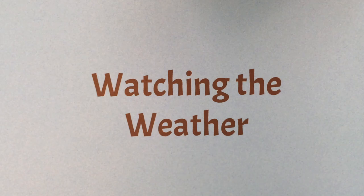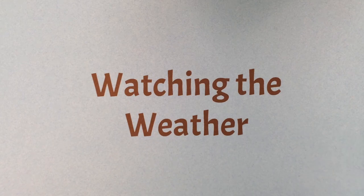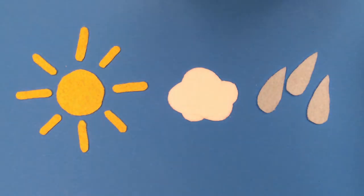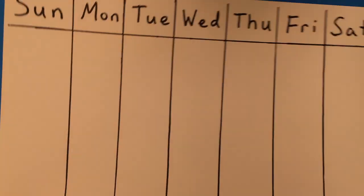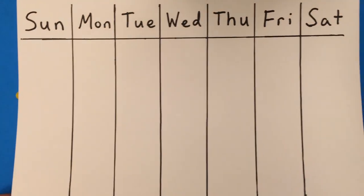You can help a child learn about weather by making a weather chart. You can talk with them about different kinds of weather, like sunny, cloudy, or rainy. Then you can make a chart for each day of the week.